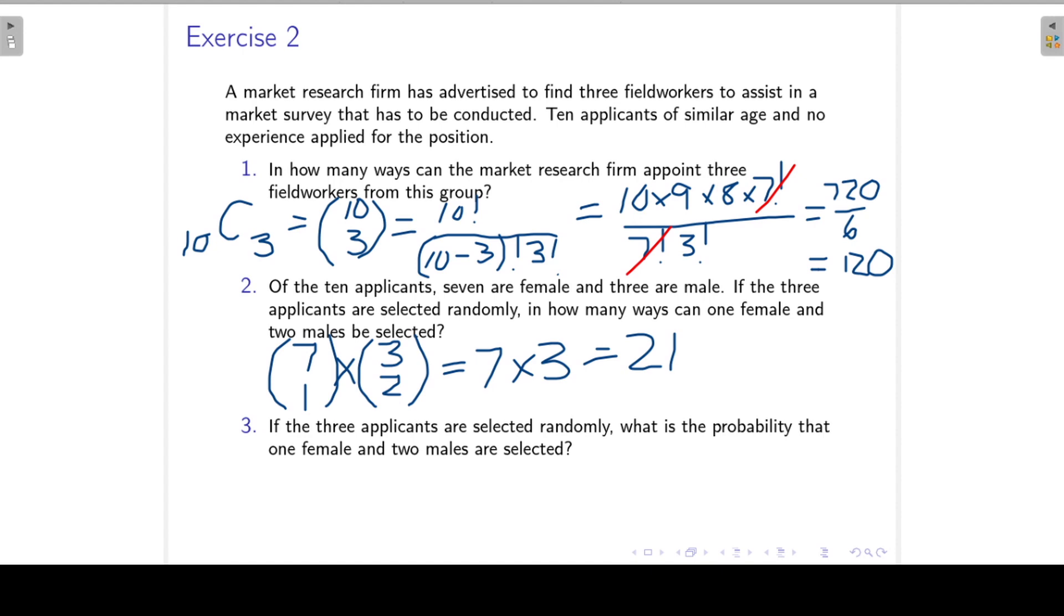And then in question 3, we combine the previous two. If the 3 applicants are selected randomly, what is the probability that 1 female and 2 males are selected? So we know from the first question that there are 120 ways of selecting 3 people randomly out of 10, and from question 2 we know that there are 21 possible ways of selecting 1 female out of the 7, 2 males out of the 3. So this probability is then equal to 0.175.